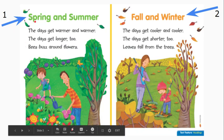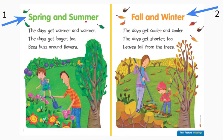Take a look here. This heading by number one says spring and summer. The text below says the days get warmer and warmer. The days get longer too. Bees buzz around flowers. The heading spring and summer gives information about the text in this section. It tells what the section will be about. The words below were about spring and summer.